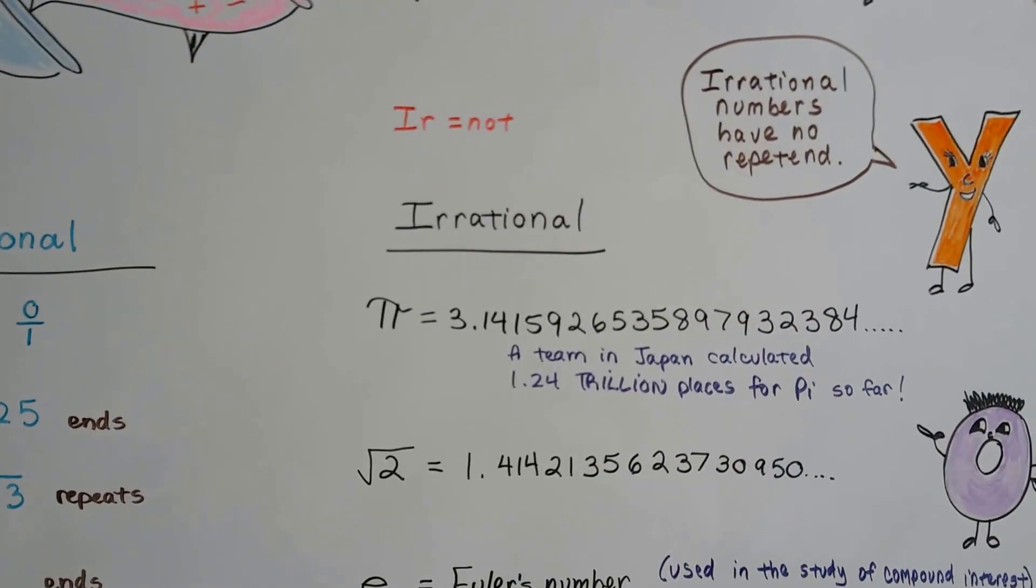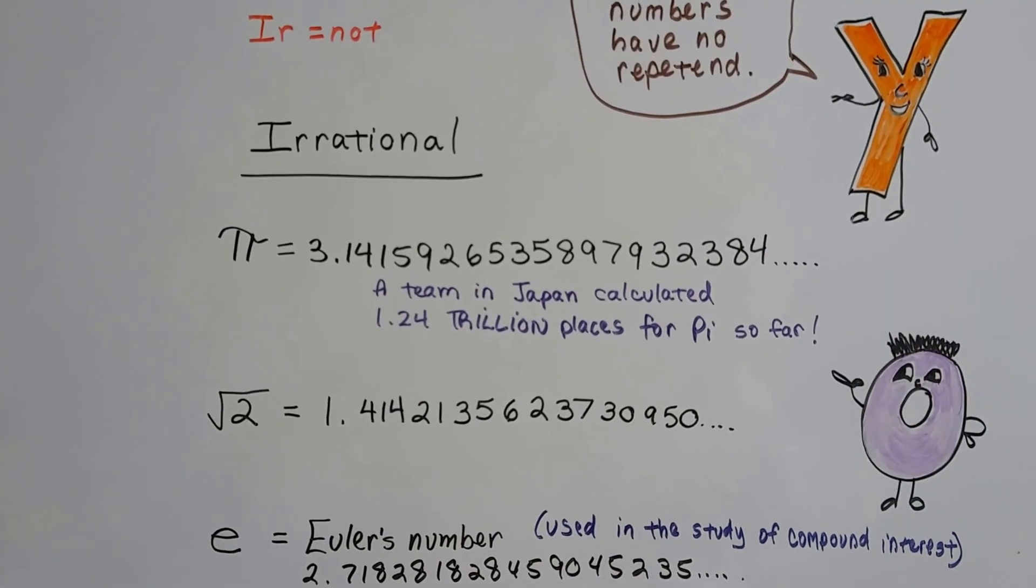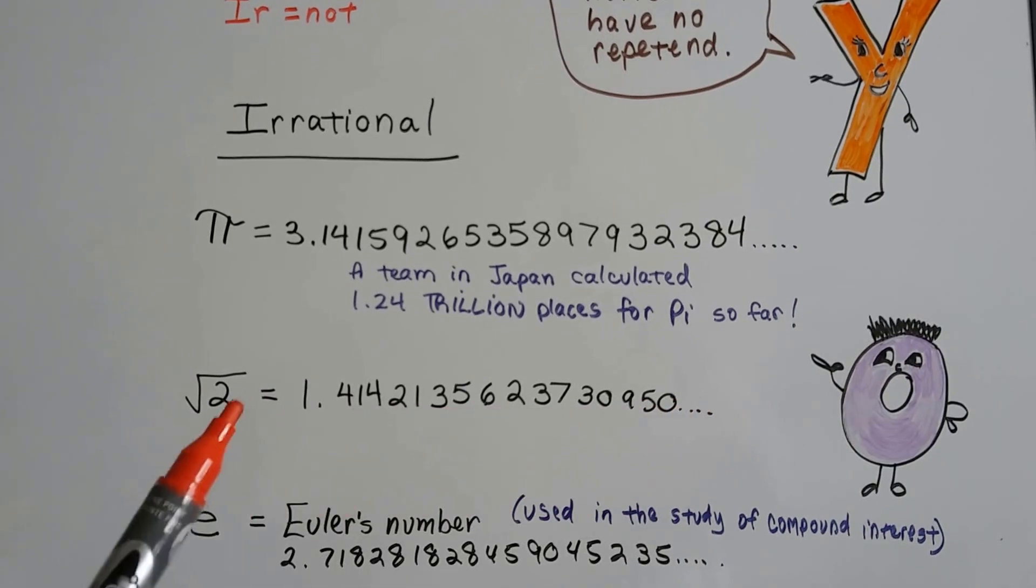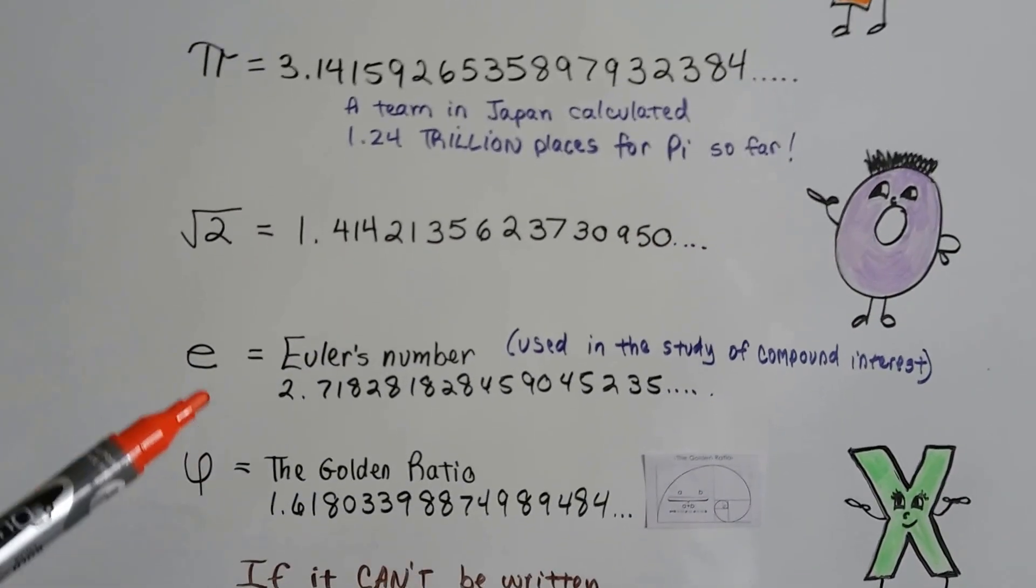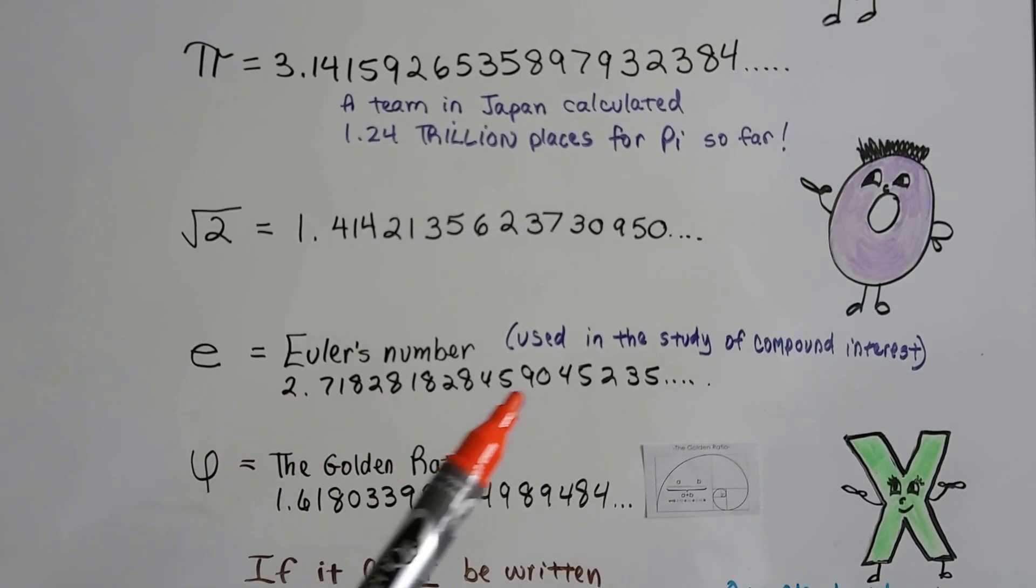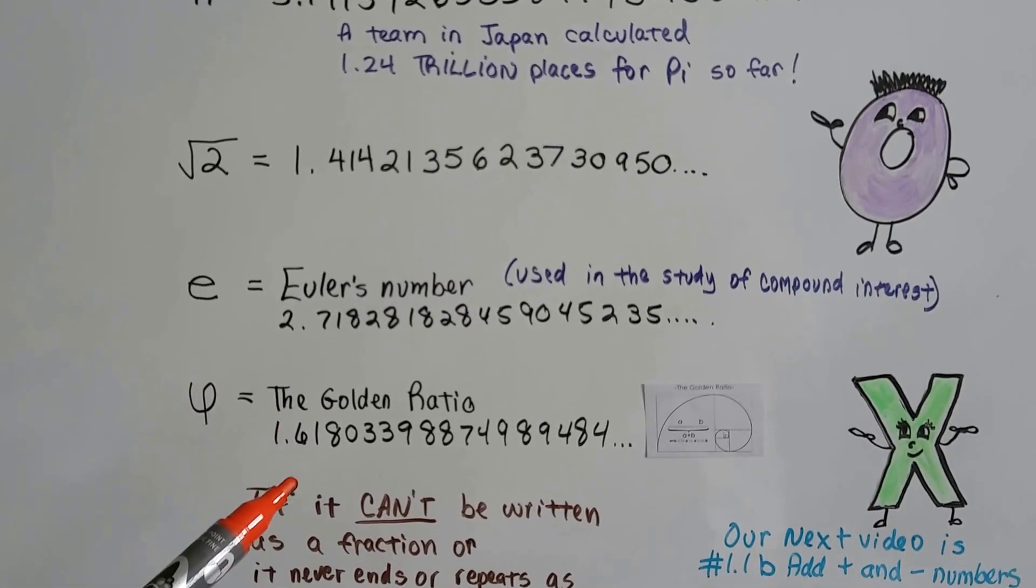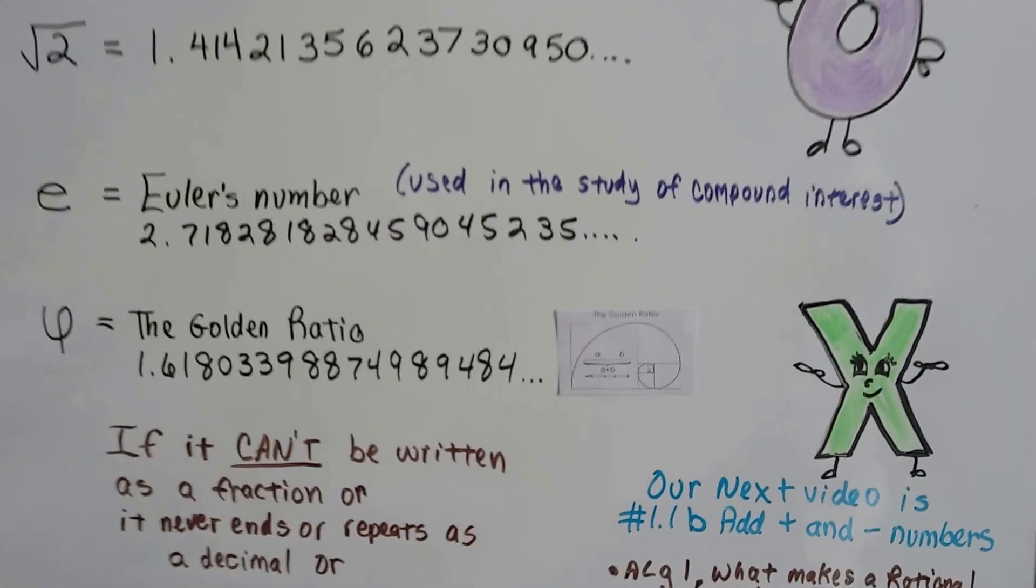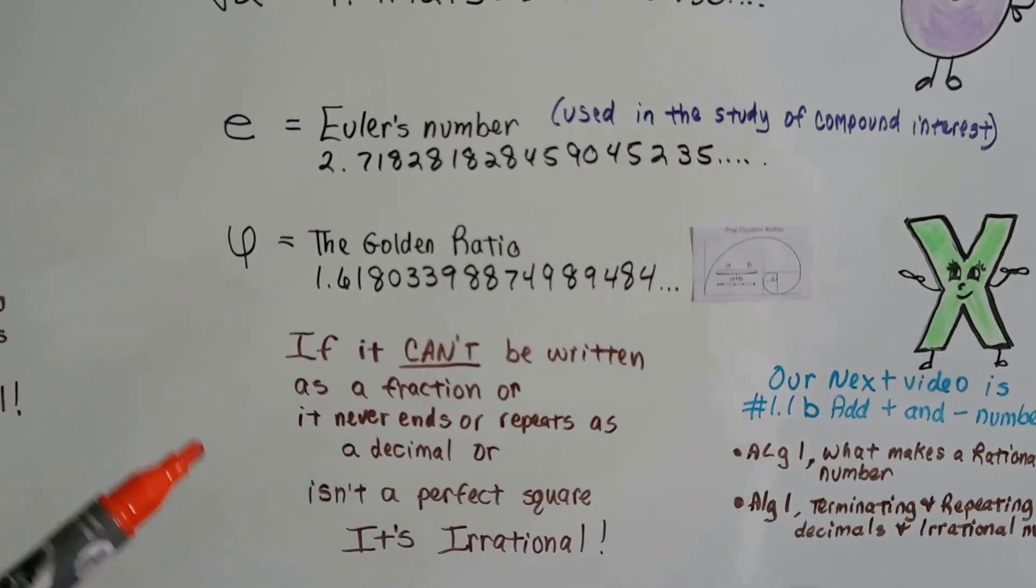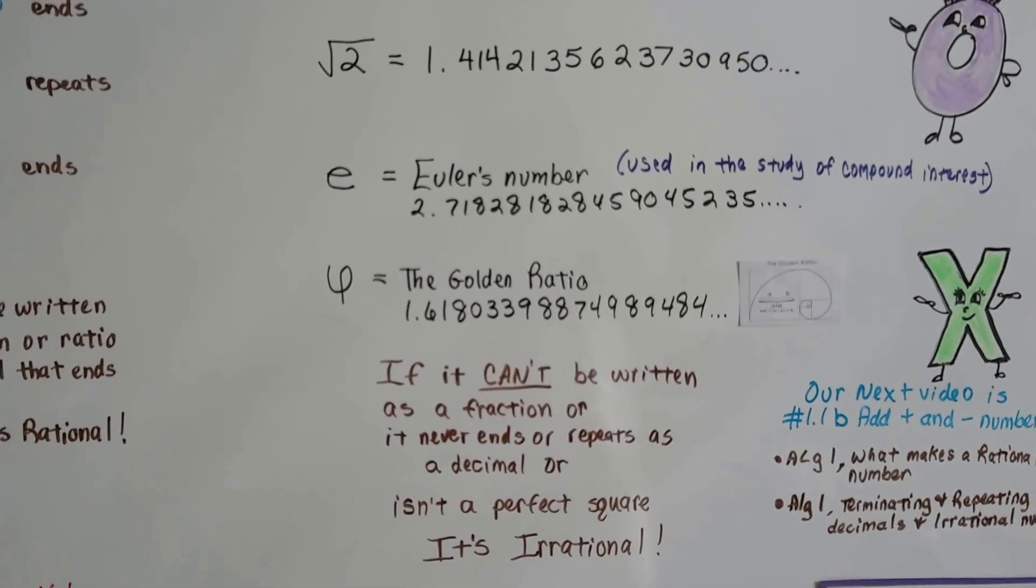The irrational ones have no repetend. Pi just keeps going on and on, and a team in Japan calculated 1.24 trillion places for pi so far. Square root of 2 has no repetend—it keeps going on and on. There's an e in math, Euler's number, used in the study of compound interest, approximately this decimal that keeps going. And this represents the golden ratio—this is the Greek letter phi for the golden ratio. It continues on and on, and it's in architecture and nature. Leaves actually grow on a plant using the golden ratio. If it can't be written as a fraction and never ends or repeats as a decimal, there's no repetend, and it's not a perfect square, it's irrational.